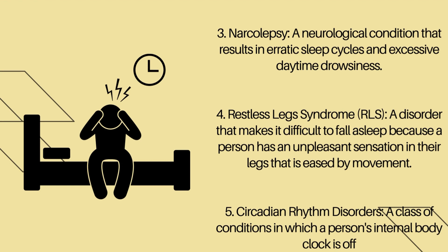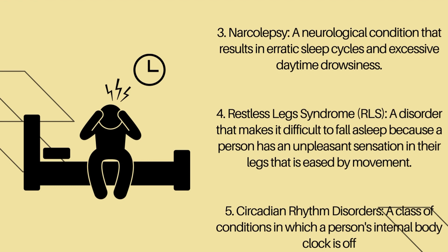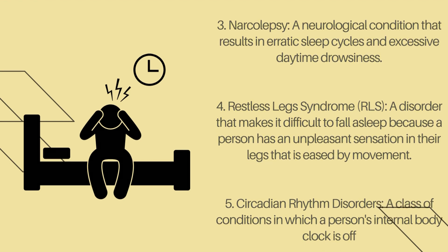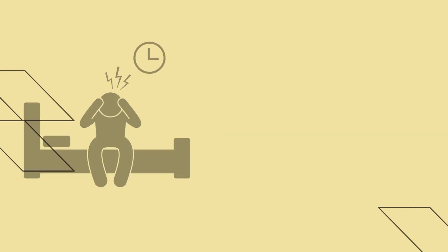4. Restless Legs Syndrome, RLS: a disorder that makes it difficult to fall asleep because a person has an unpleasant sensation in their legs that is eased by movement. 5. Circadian rhythm disorders: a class of conditions in which a person's internal body clock is off.